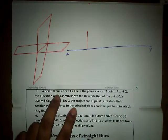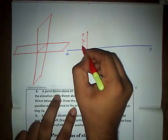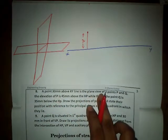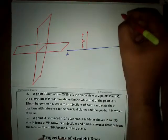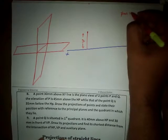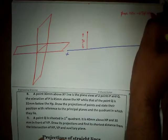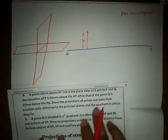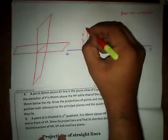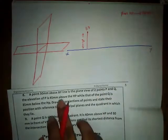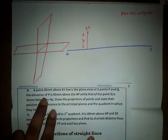According to the question, a point 30mm above the XY line is indicated. Plan view is nothing but the top view, so the top view of P and Q is represented as small p and small q. This point is going to be the plan view of two points P and Q.